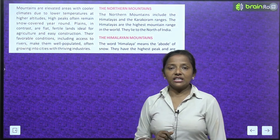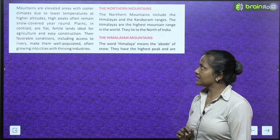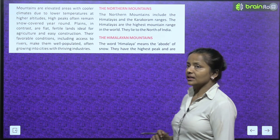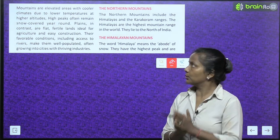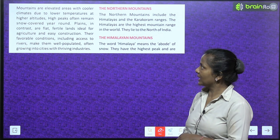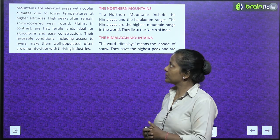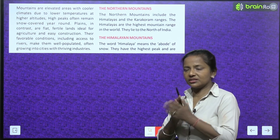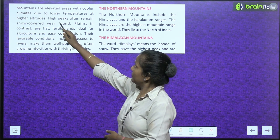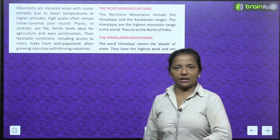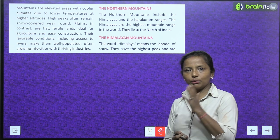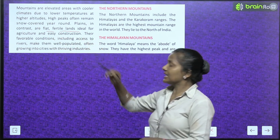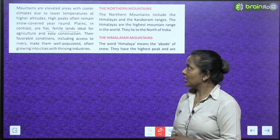Mountains are elevated areas with cooler climates due to lower temperatures at higher altitudes. At high altitudes, the temperature goes down, which is why it is cold there. High peaks often remain snow-covered year around. Plains, in contrast, are flat, fertile lands, ideal for agriculture and easy construction.